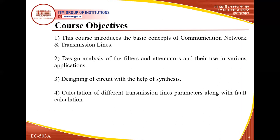During transmission of power, we use transmission lines and different types of parameters — primary and secondary parameters — are important. We learn how to calculate these parameters and how to calculate faults over the line, because the line can be very long, up to kilometers. This is an important point — how we can calculate fault localization over the transmission line. These are some important objectives which are covered.